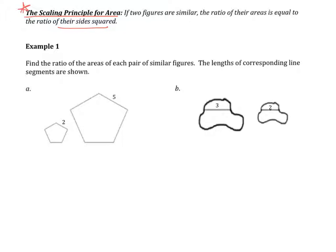Let's take a look at example 1. Find the ratio of the areas of each pair of similar figures. The lengths of corresponding line segments are shown. If you take a look at the pentagon, the scale factor that takes the smaller pentagon to the larger pentagon is 5 over 2. That means that according to the scaling principle for area, the areas of the larger to the smaller is 25 over 4, therefore the ratio of the area for the smaller to the larger is 4 to 25.